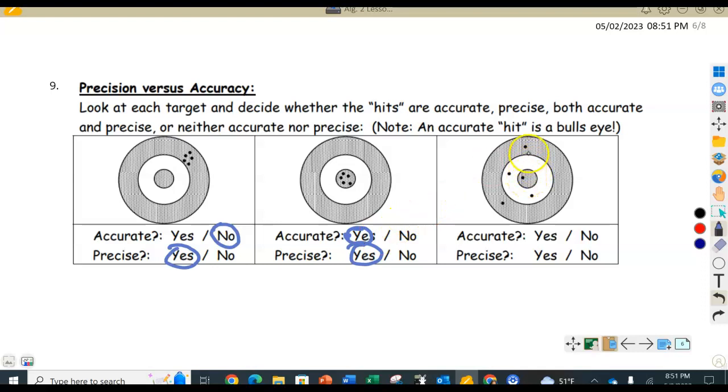This one has one hit in the bullseye, but the rest are all over the place. So this one's not going to be accurate, and it's not precise because they're not grouped together, and only one hit the bullseye.